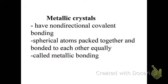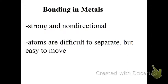Then we have metallic crystals, which are non-directional covalent bonding, packed together and equally bonded to each other. Bonding in metal is strong and non-directional. The atoms are very difficult to separate, but they're easy to move, which is why we can do things like hammer them into a thin sheet or pull them into a wire, because I can move them around, but it's hard to separate them.